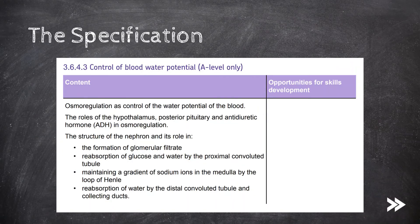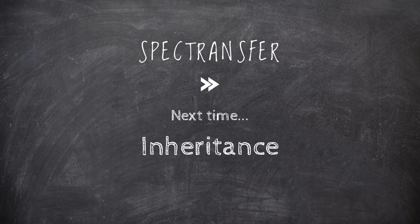Great, that would be the control of blood water potential covered. We have covered how osmoregulation is the control of the water potential of the blood, the roles of the hypothalamus, the posterior pituitary gland and ADH in osmoregulation, the structure of the nephron and its role in the formation of the glomerular filtrate, the reabsorption of glucose and water by the proximal convoluted tubule, the maintaining of a gradient of sodium ions in the medulla by the loop of Henle, as well as the reabsorption of water by the distal convoluted tubule and collecting ducts. That would be it for now guys, thanks for watching, please subscribe and comment. Next time we will be covering inheritance.